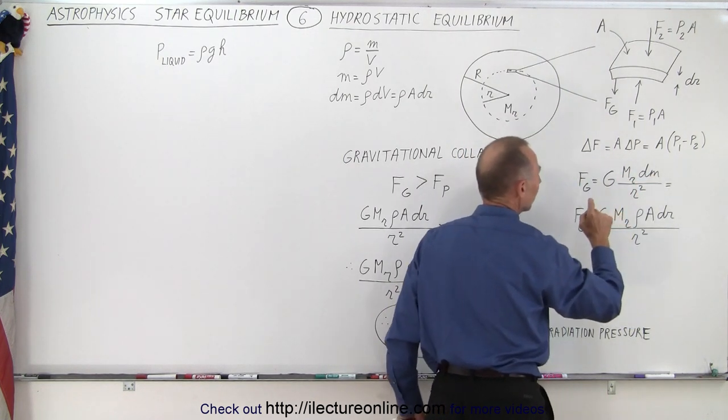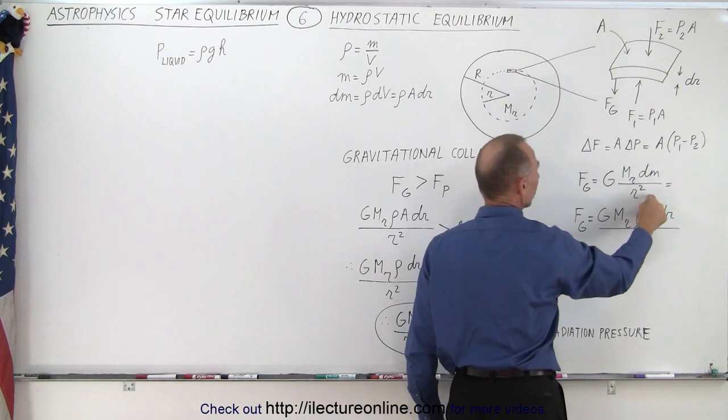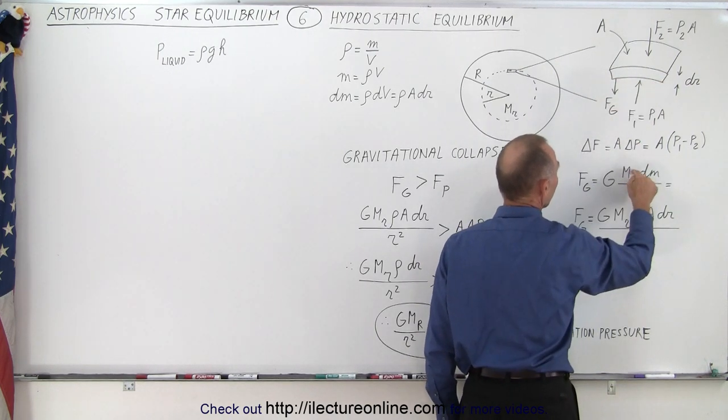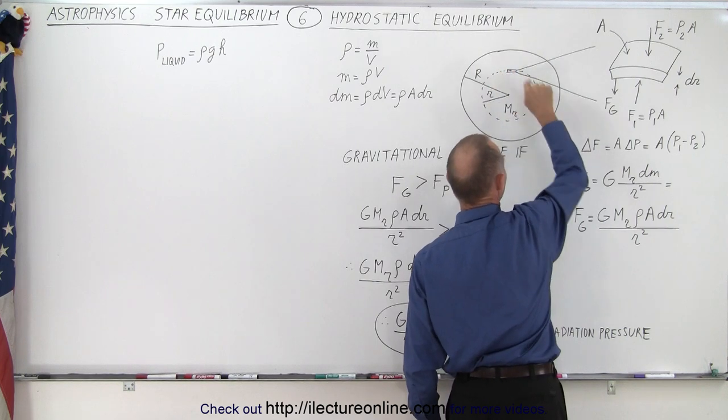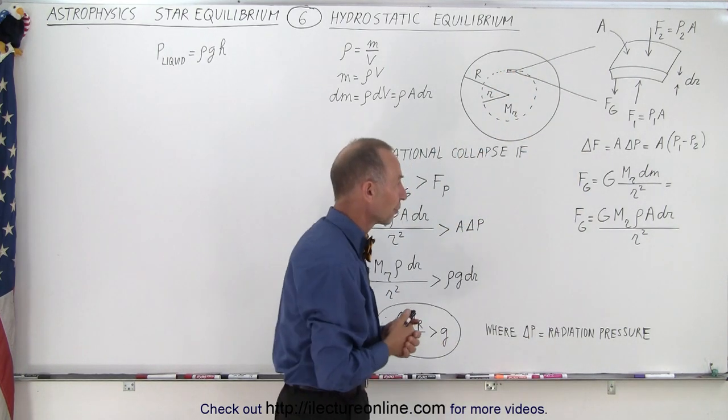Now, notice that we have to take the distance from the center to that portion right there, which is small r squared. dm is the mass of the little piece of layer. m sub r is the mass of the star inside that boundary region there. So it's simply Newton's equation of gravity.